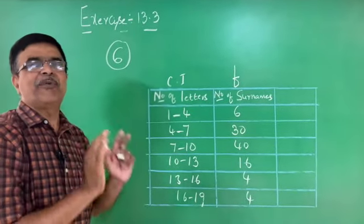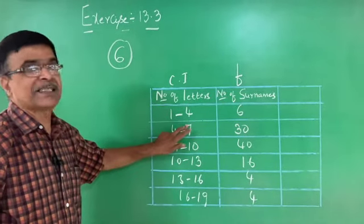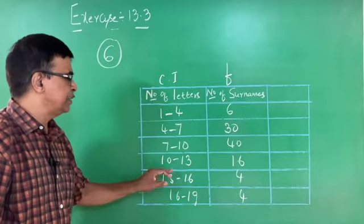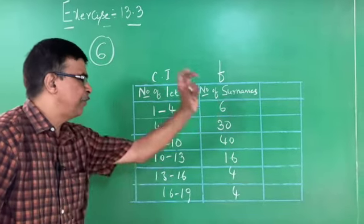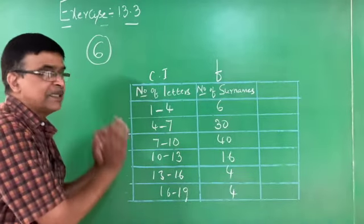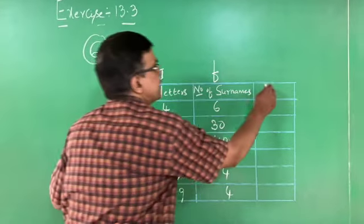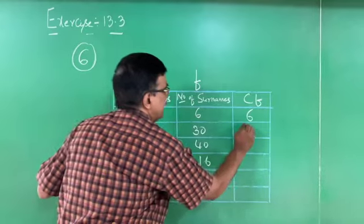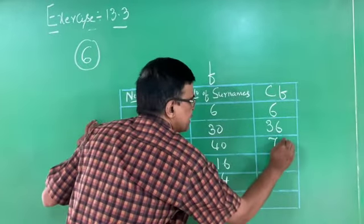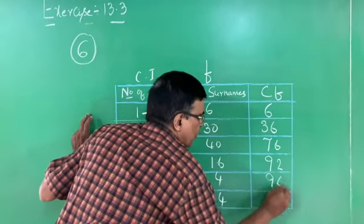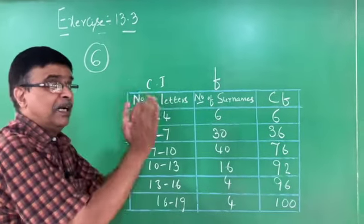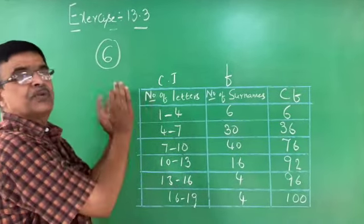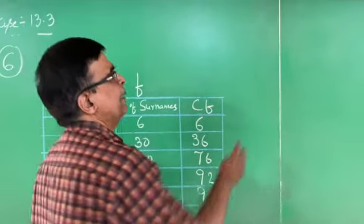The cumulative frequencies are: 6, 6+30=36, 36+40=76, 76+16=92, 92+4=96, 96+4=100. N = 100 and the last CF is also 100. For this grouped data, we calculate the median.